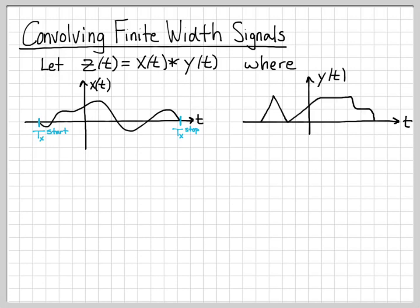And then let's also define y of t to look something like this. Again, we're not going to go through the details of convolution. We're just trying to talk about what happens when you convolve finite width signals. For this signal, we're going to use the notation t sub y to indicate we're talking about y of t. And the same superscript notation start and stop. So y of t is 0 for all times before t sub y start and it's 0 for all times after t sub y stop.